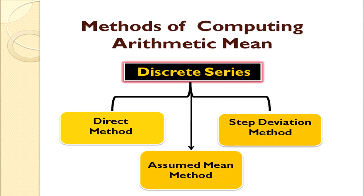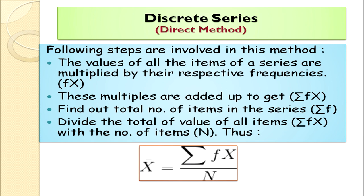We have learned how to calculate arithmetic mean for individual series — first by direct method and then by shortcut method. Now we discuss arithmetic mean for discrete series. In discrete series, there are three methods: direct method, assumed mean method, and step deviation method. In the direct method, the values of all items are multiplied with their respective frequencies, giving an fx column.